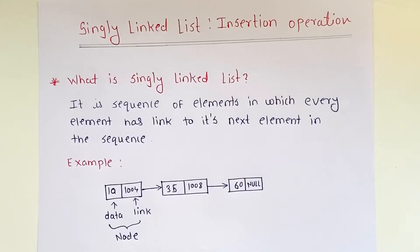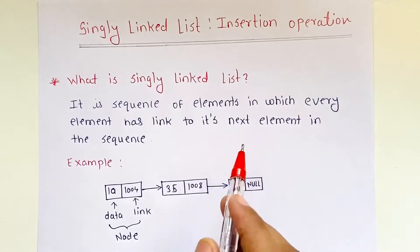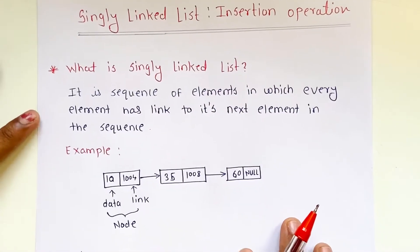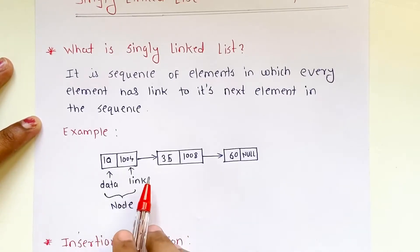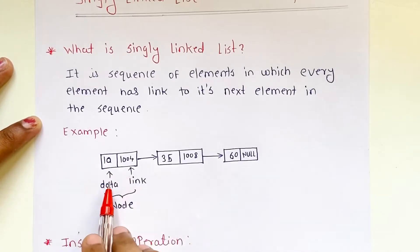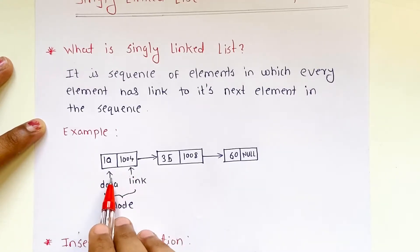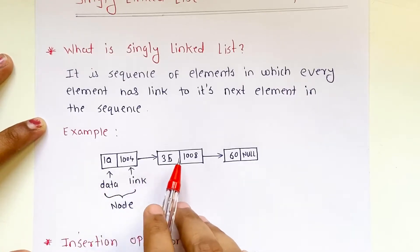Welcome back to Quick Lessons with Prachitik. In this video we are going to see how to insert a node in a singly linked list. A singly linked list is a sequence of elements in which every element has a link to the next element in the sequence. Every node contains two fields: one is a data field and another is a next field. The data field consists of the actual value of the node and the next field stores the address of the next node in the sequence.